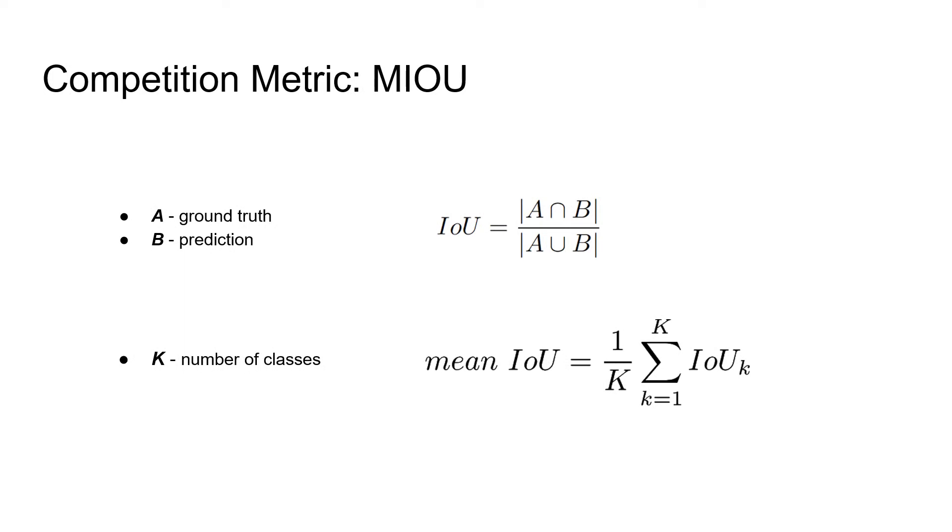Say we have ground truth mask A and predicted mask B. The score taken by the intersection area of this mask divided by their union gives us intersection over union score. The competition score was mean IOU, which is the average of IOUs of four aforementioned classes. So, let's jump to the solution.